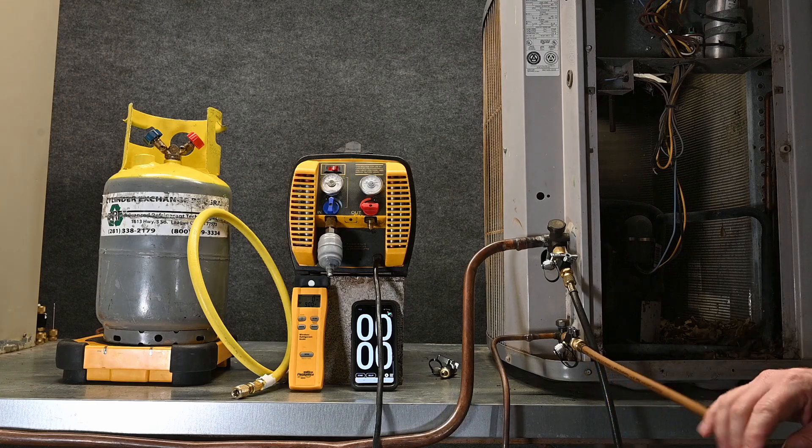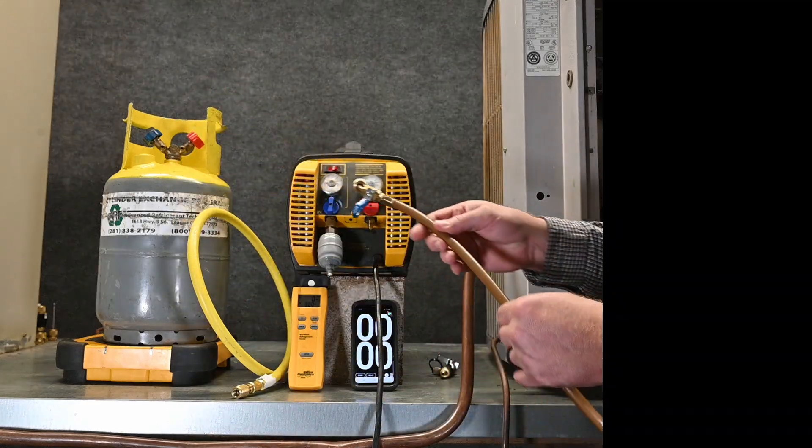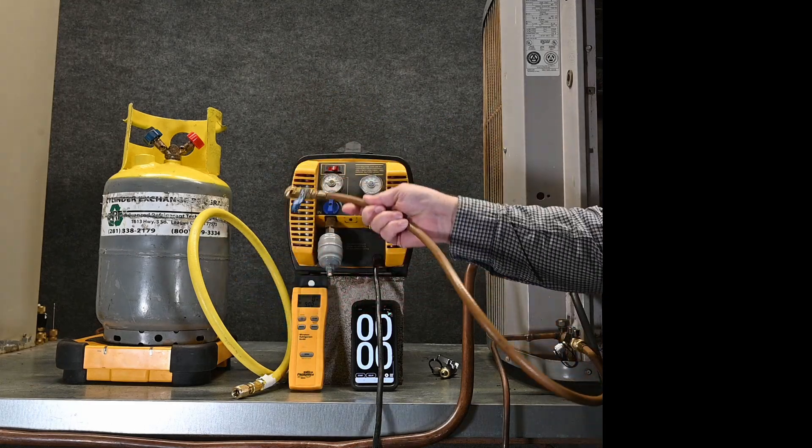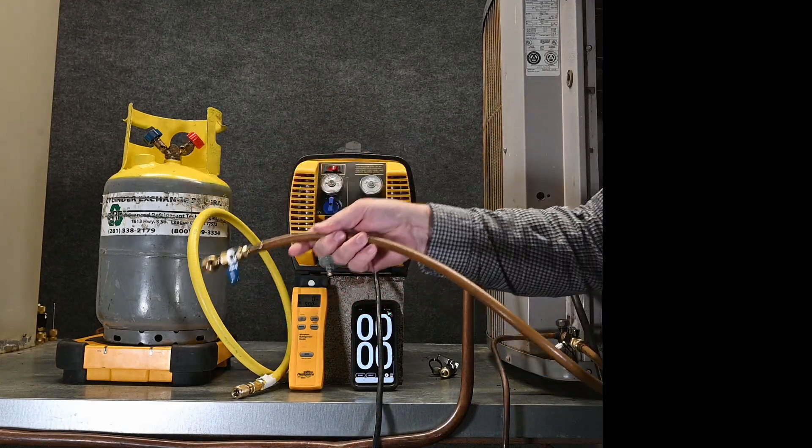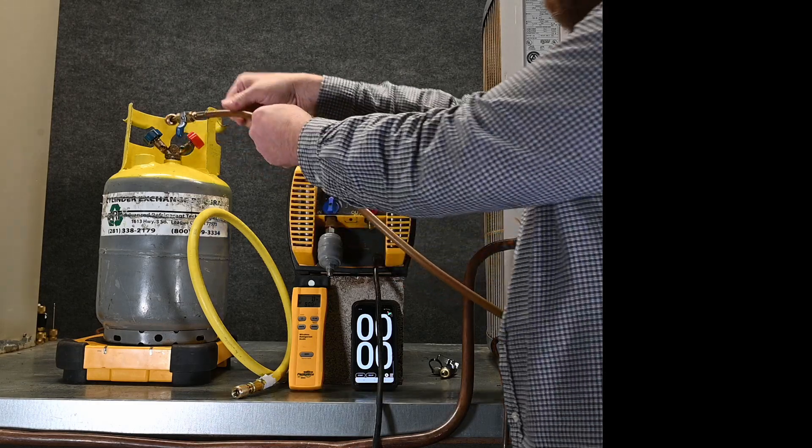So what we're going to do is take our liquid line, our high-pressure liquid side, and hook it up to the liquid on the tank. Now we could turn the tank upside down and hook it to the vapor port, or in this case we're just simply going to hook it up to that straw or dip tube.